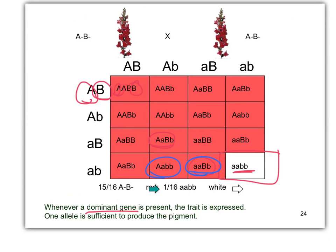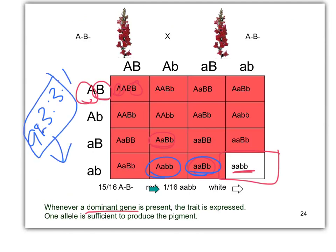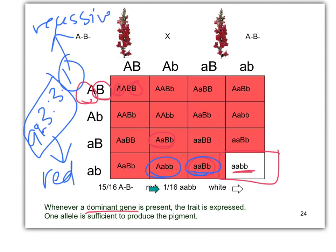So again, it's a modification of the 9 to 3 to 3 to 1 where everybody is the one phenotype, and the other is the recessive. That's redundancy. That's all it is.